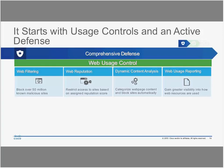With the web usage reporting piece, we can see what content users have been accessing online — for example, the top categories visited on users' browsers: business news, entertainment news, file transfer services. You'll see this later in the demo how this reporting works.